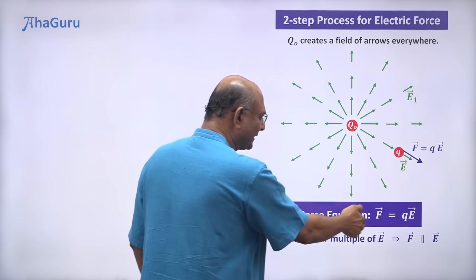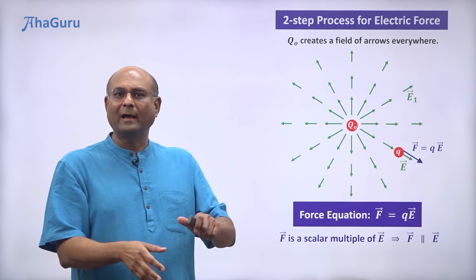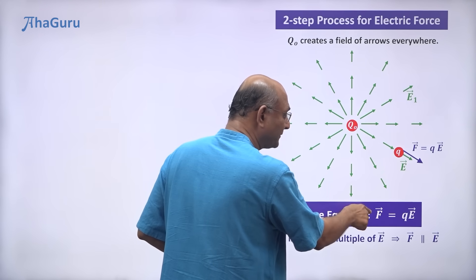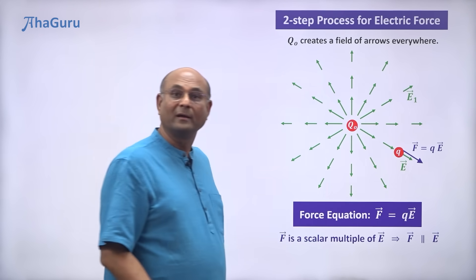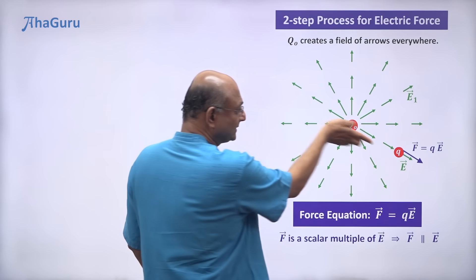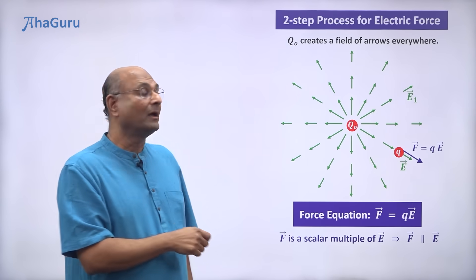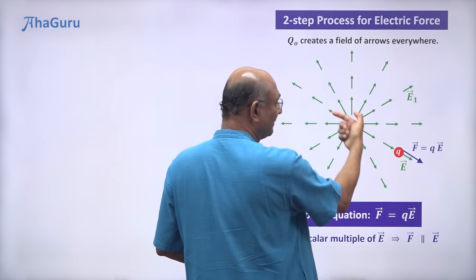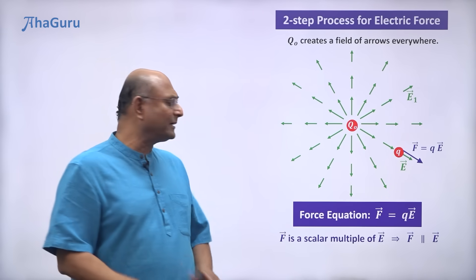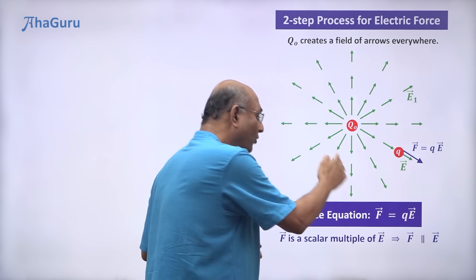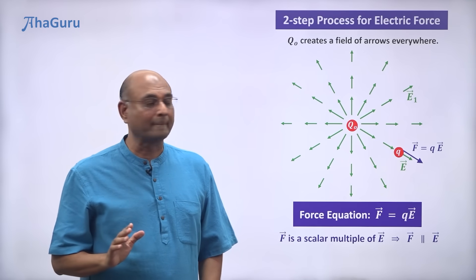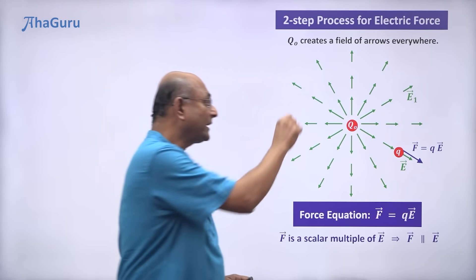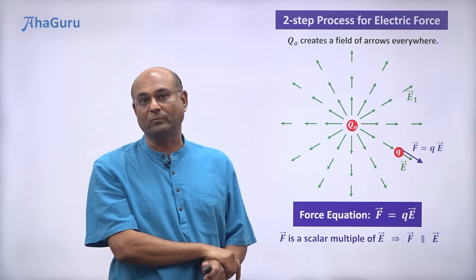So F is going to be parallel to E. Parallel — does it mean the same direction? If it is a positive charge, F will be in the same direction as E. If it is a negative charge and I multiply by a negative number, it will be in the opposite direction. Either way, it is going to be parallel. So the force is going to be parallel to the E vector. There are many E vectors, so you must take the E vector at the location of the charge Q.